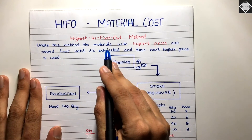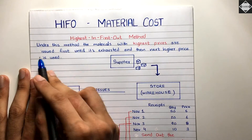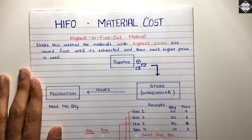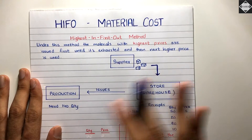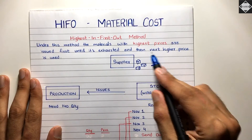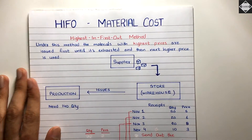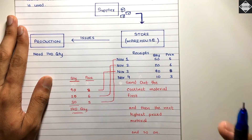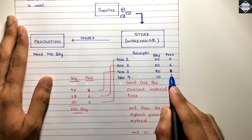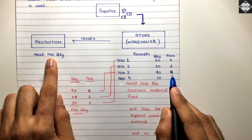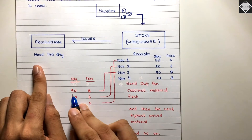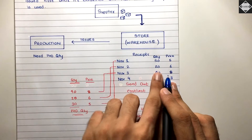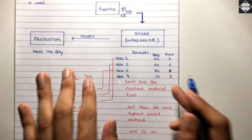That's why we have the HIFO method. Under this method, the materials with the highest prices are issued first — the materials which came into the warehouse at the highest prices go out first, until that lot is exhausted. Then the next highest-priced lot is used for issuing. So identify the highest-priced lot: Lot 3 has 90 quantity at ₹8. Since we need to send out 140, we first use Lot 3 — 90 quantity at ₹8. That lot is now exhausted.